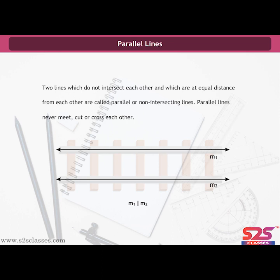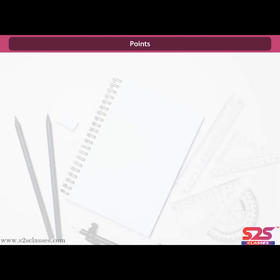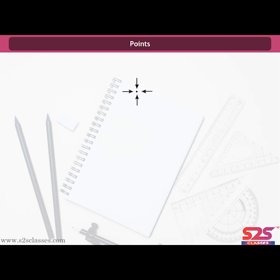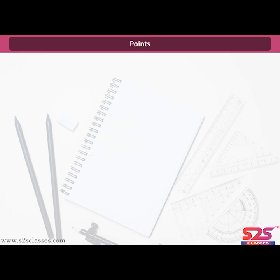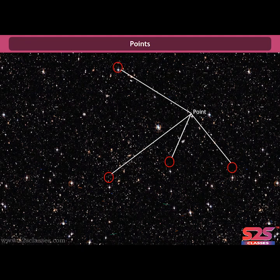The two lines m1 and m2 are parallel to each other. Point: take a pencil and mark a dot on a piece of paper — the image we get is called a point. A point is simply a dot; it determines an exact location and has no size or dimension. A point is generally denoted by a capital letter of the English alphabet like A, B, C, and so on. For example, the sharpened end of a pencil or stars in the sky appear to us as a point.